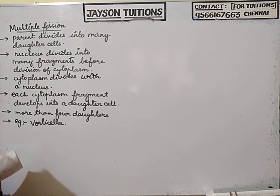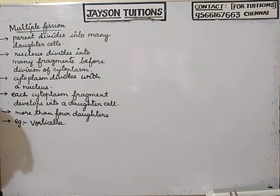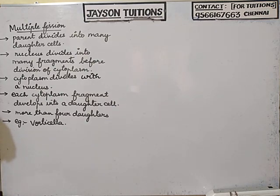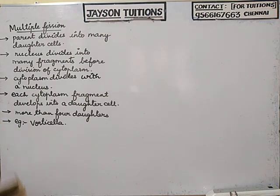So what are we going to learn? Binary fission, multiple fission. Next: Plasmotomy, Strobulation, and Sporulation. So first: Plasmotomy, Sporulation, and Strobulation. We have multiple fission — example: Vorticella.